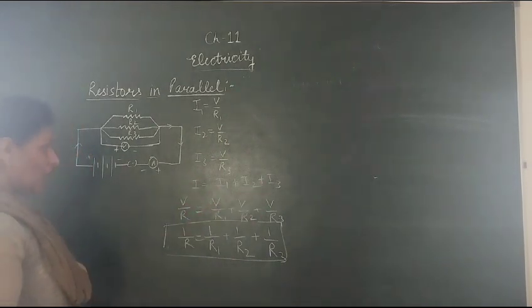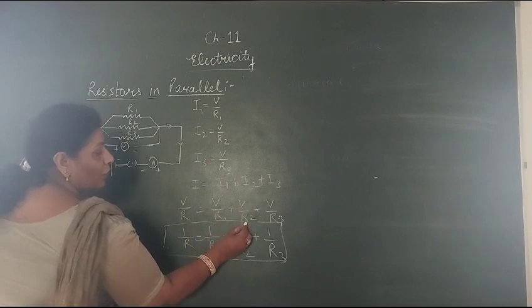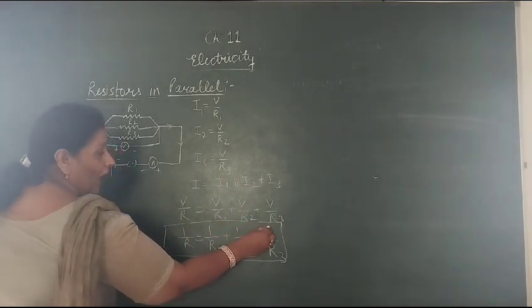We know that I equals V upon R. So V upon R equals V upon R1 plus V upon R2 plus V upon R3.